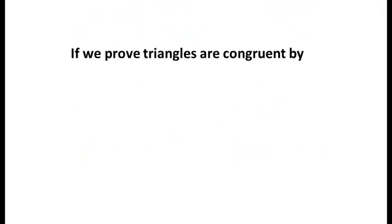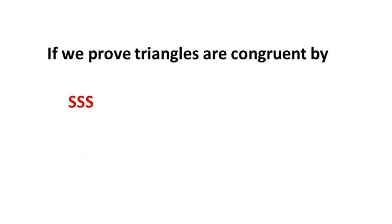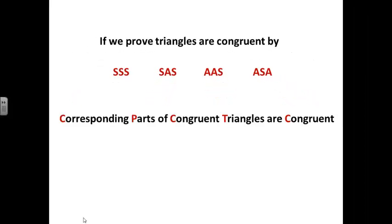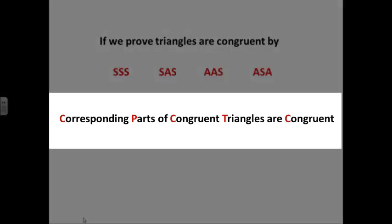Specifically, if we prove triangles are congruent by side-side-side, side-angle-side, angle-angle-side, or angle-side-angle, well then all of the parts that weren't part of the original proof are also congruent. Corresponding parts of congruent triangles are congruent.